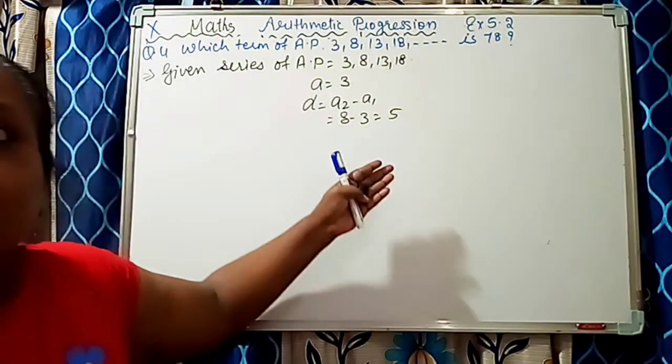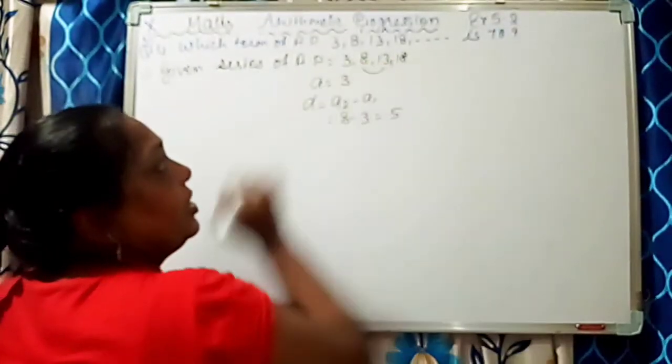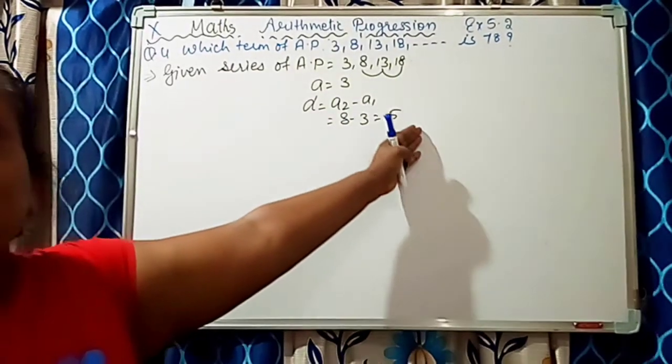So 5 is given. If we go for 13 minus 8, then also 5. 18 minus 13, then also 5. The difference will be 5 only.